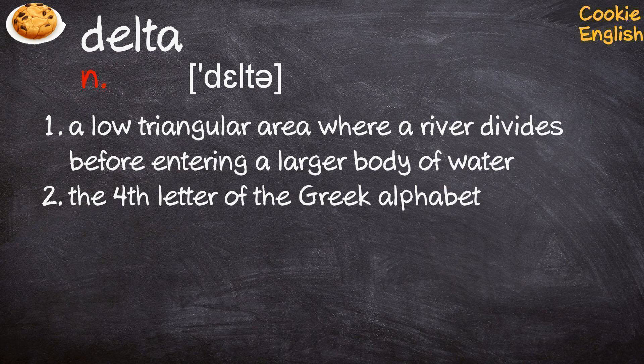Noun. 1. A low triangular area where a river divides before entering a larger body of water. 2. The fourth letter of the Greek alphabet.